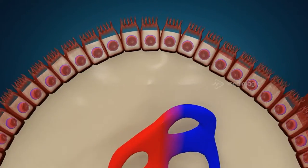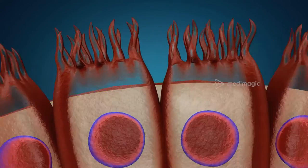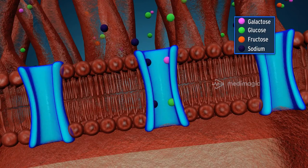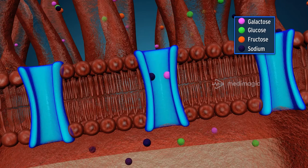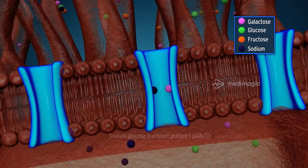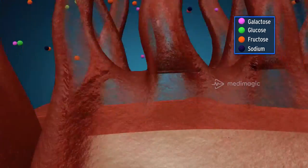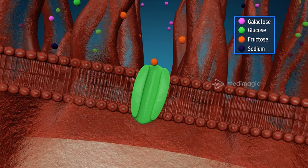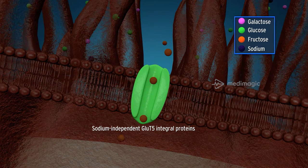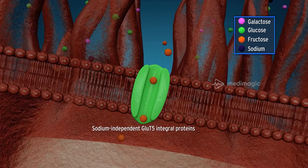The sugars undergo different transport mechanisms. Glucose and galactose enter enterocytes through sodium glucose transport protein 1, SGLT1. Fructose enters enterocytes by sodium-independent GLUT5 integral proteins that facilitate passive diffusion.